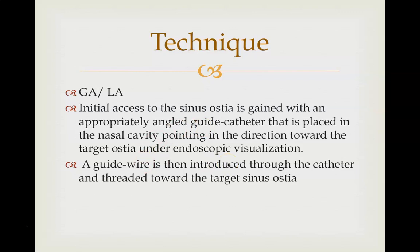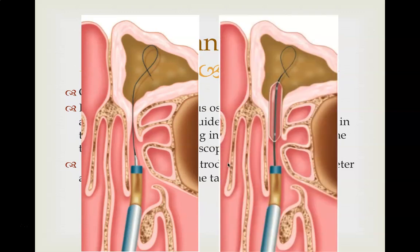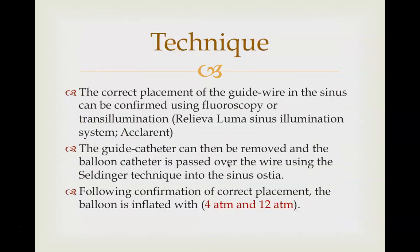Balloon sinuplasty is most commonly used for the frontal sinus. This picture shows how the guide wire is passed through the guide catheter into the frontal sinus. The next step is the balloon catheter, which is passed over the guide wire into the sinus ostia and inflated. After correct placement of the guide wire, we need to confirm it.